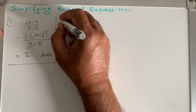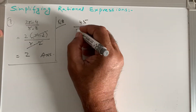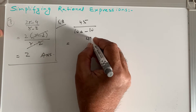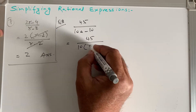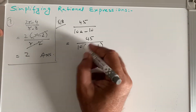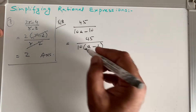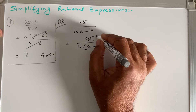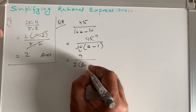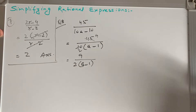Question 8: 45 / (10a - 10). In the denominator, 10 is common, giving 10(a - 1). We then simplify 45 and 10 using the factor 5: five 9s are 45 and five 2s are 10. The answer is 9 / (2(a - 1)).